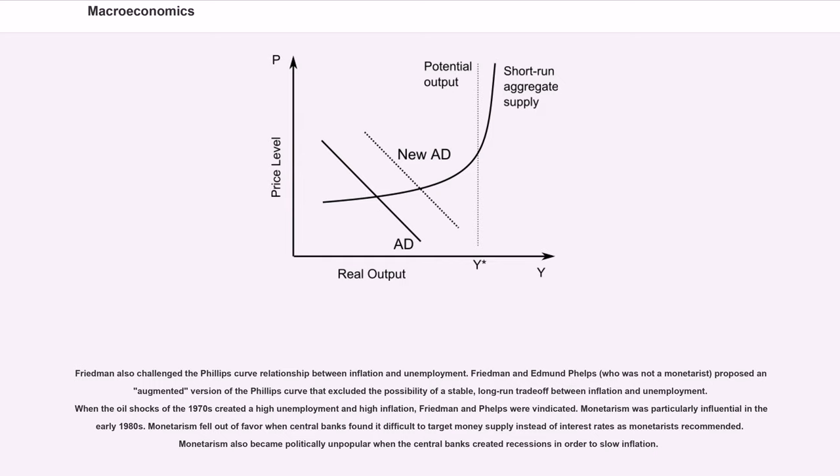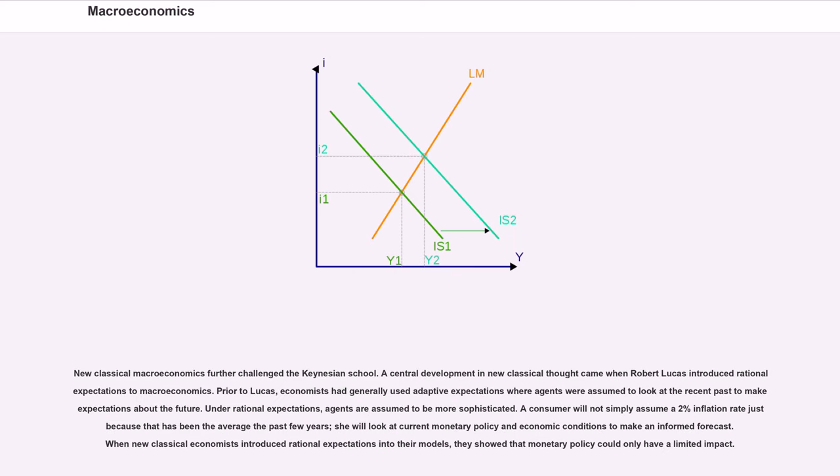Monetarism fell out of favor when central banks found it difficult to target money supply instead of interest rates as monetarists recommended. Monetarism also became politically unpopular when the central banks created recessions in order to slow inflation. New classical macroeconomics further challenged the Keynesian school.